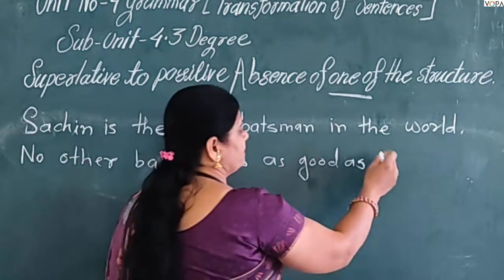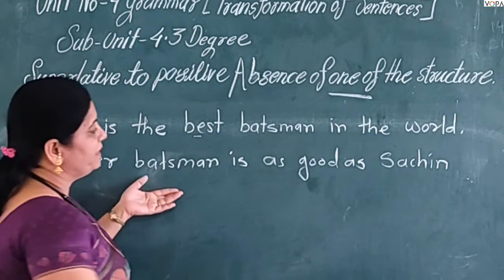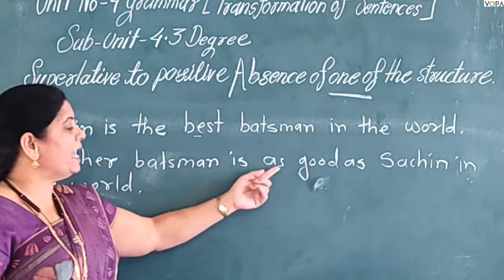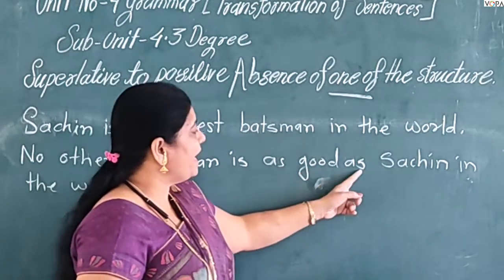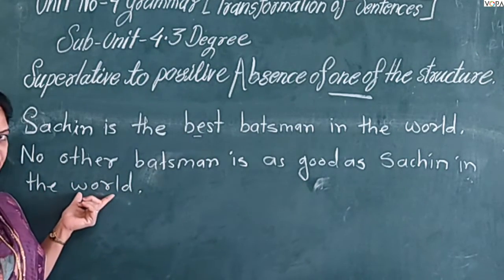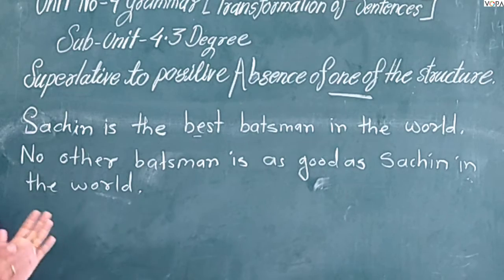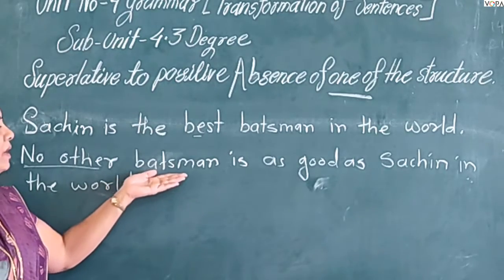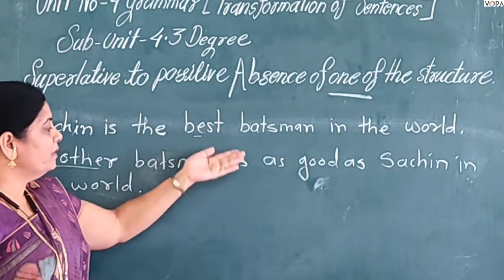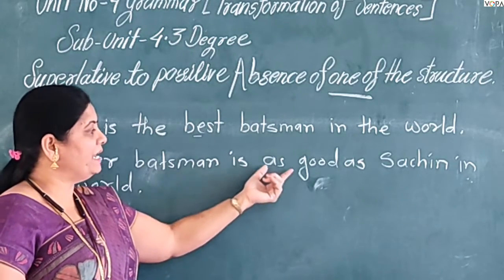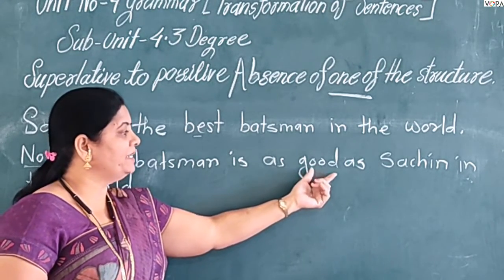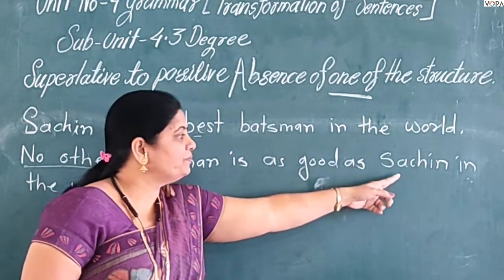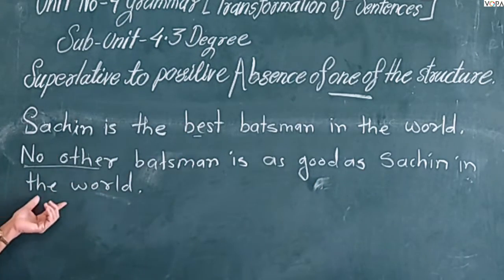Then the subject of the sentence, then the other word in the sentence. We start with 'no other', then the common noun 'best man', then the word 'is', then the positive form of the adjective — 'as good as' — then the subject of the sentence 'Sanjee', then the other word in the sentence — 'in the world'.